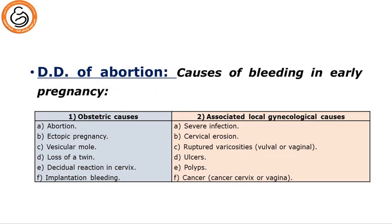For differential diagnosis of abortion: causes of bleeding in early pregnancy may be obstetric causes or associated local gynecological causes. For the obstetric causes, we should exclude ectopic pregnancy, hydatidiform mole, loss of a twin, decidual reaction in the cervix, and implantation bleeding that sometimes occurs at the time of implantation. Local gynecological causes to be excluded include severe infection, cervical erosion, ruptured varicosities, vaginal ulcers, cancer cervix, or cancer vagina — evaluated by local vaginal examination using a speculum to identify the source of bleeding.